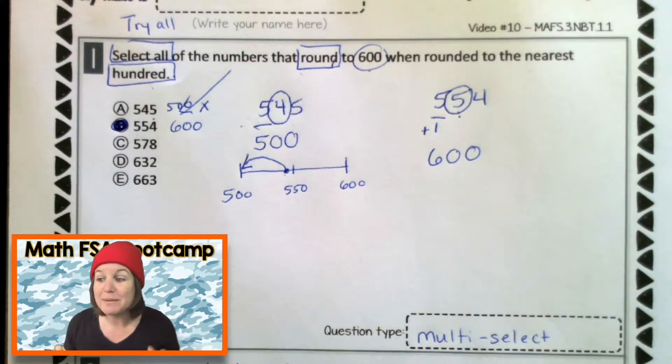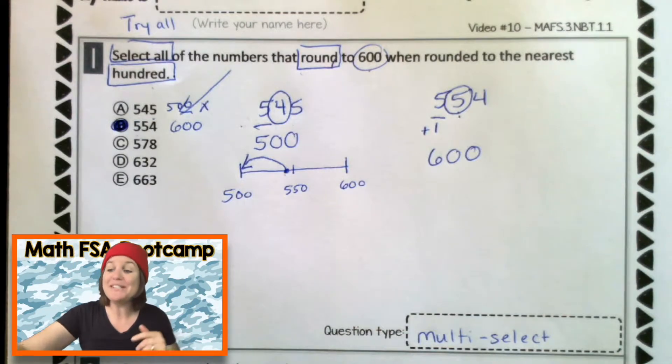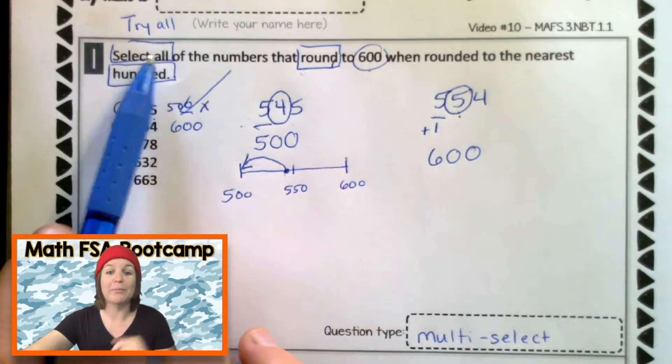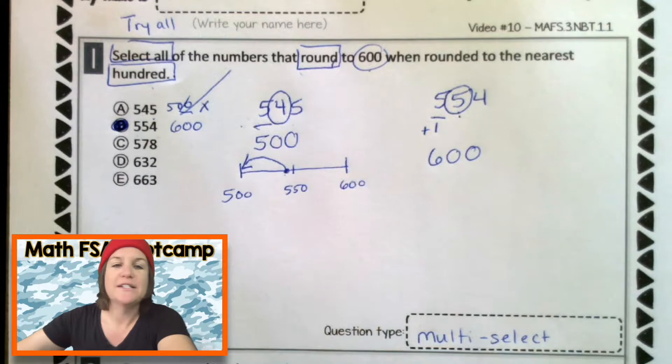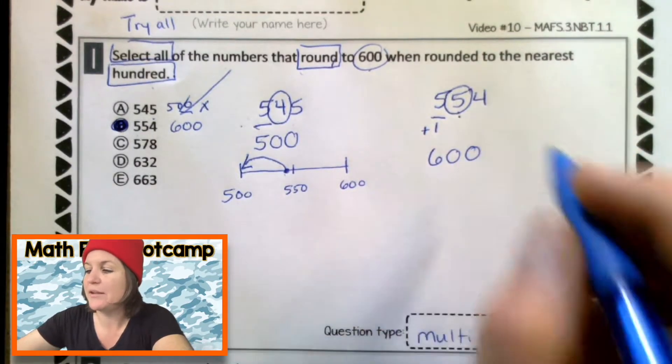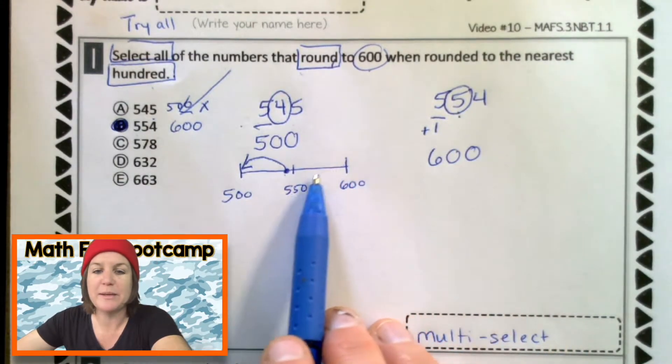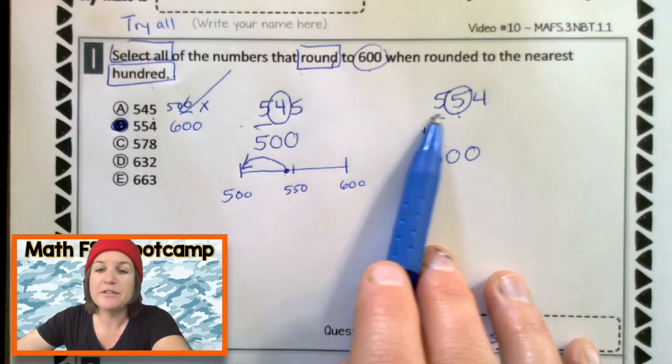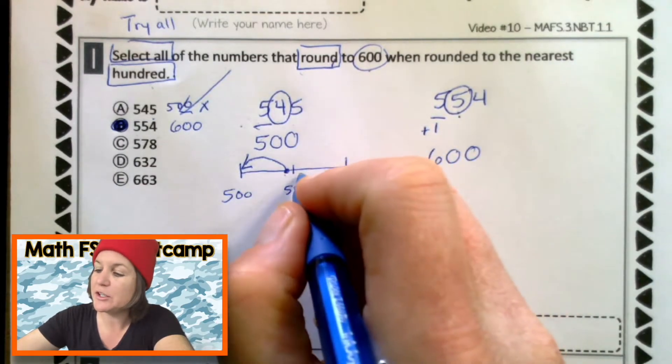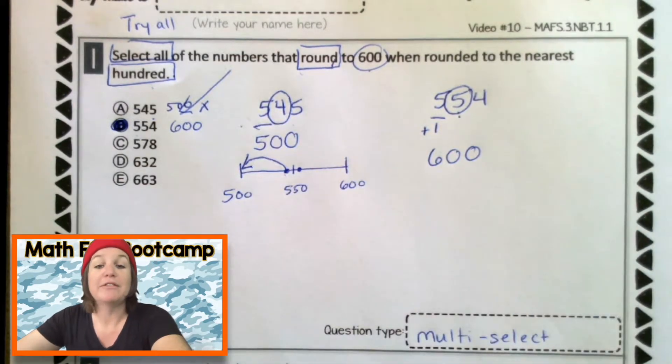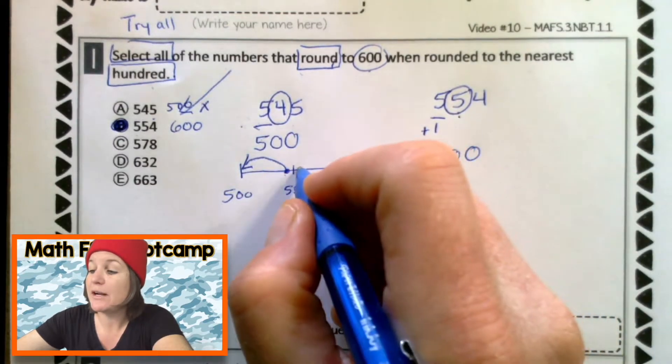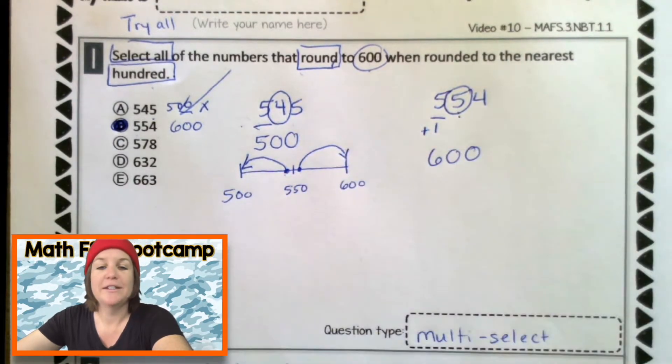Wrong. We need to make sure that we go through all of them. We said we were going to try all of them. We will work out all of them to make sure. Now, if we were thinking about this on a number line, 554 would be just a little bit after 550. Which means that we are rounding up to 600.